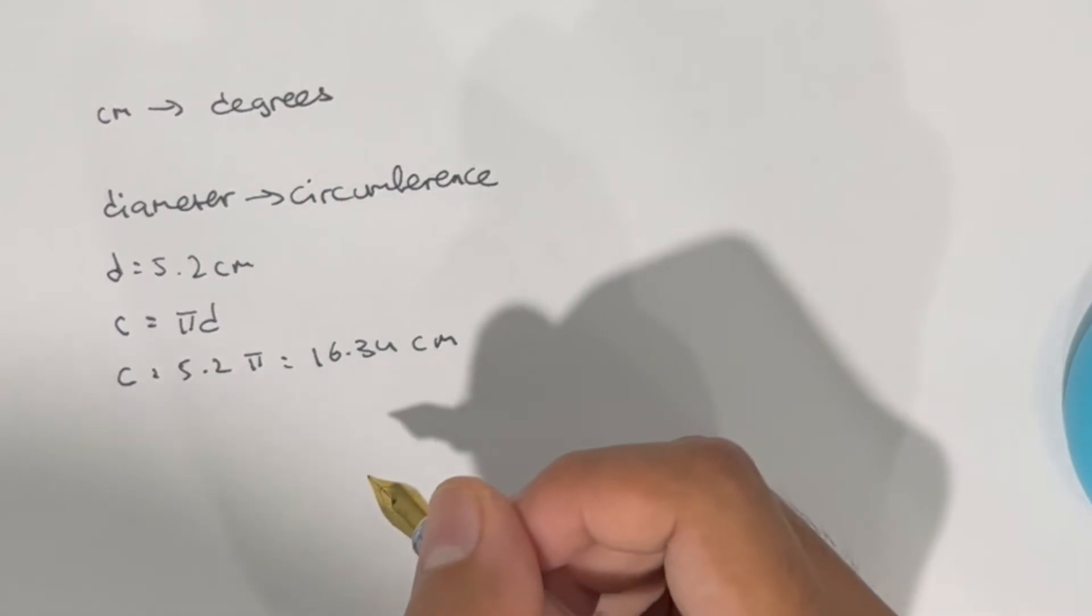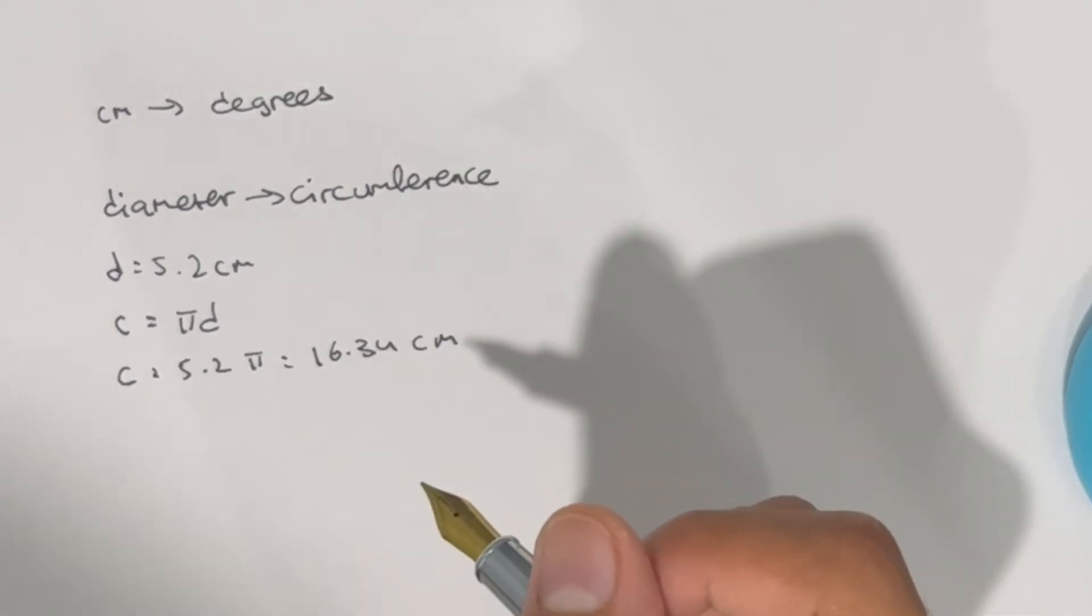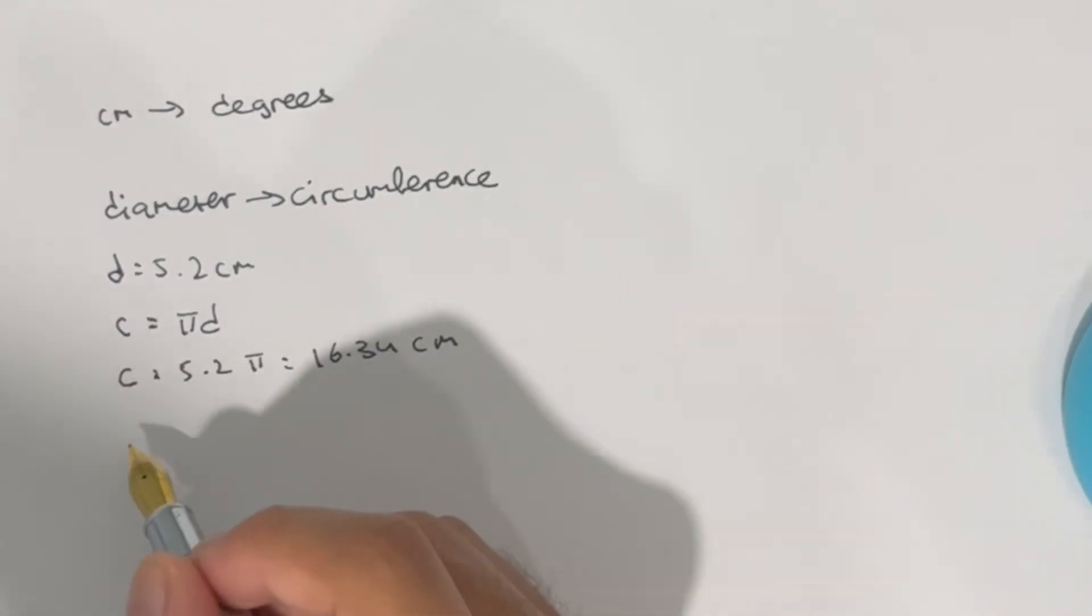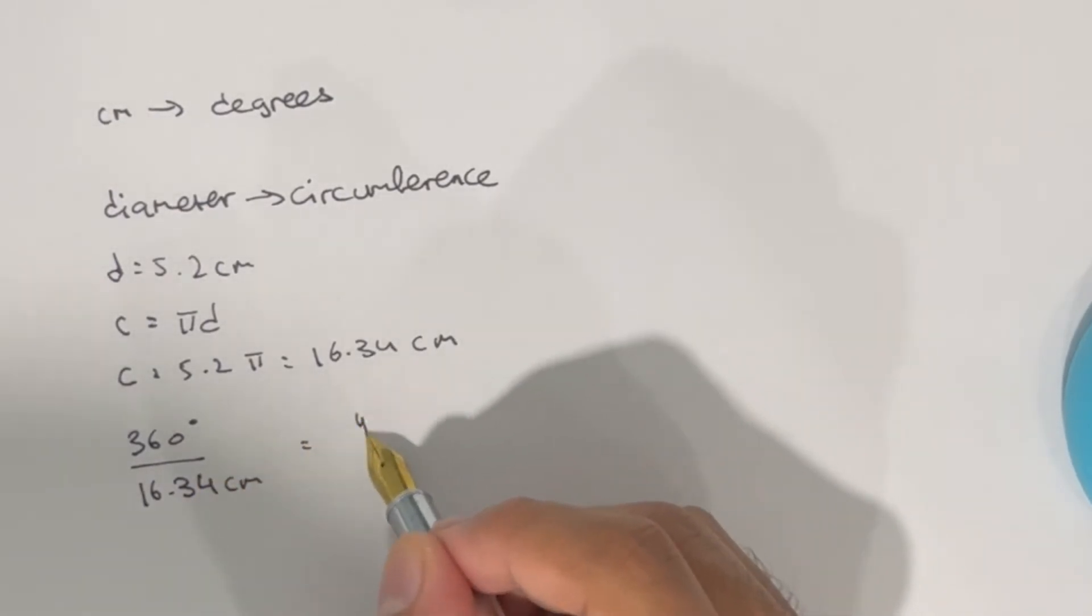Now what I need to do is create a formula that I can use to find unknown degree values given a centimeter input. We know that 360 degree rotations will make the wheel travel 16.34 centimeters. We want to find an unknown amount of degrees, which is y, for an unknown amount of centimeters, which I'll set as x.